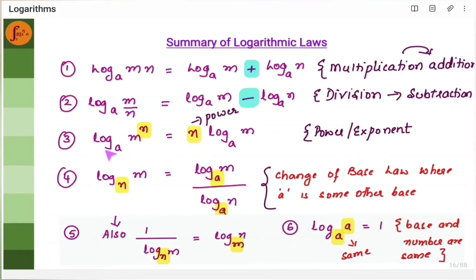The third law is log m to the power n. That is, if you have a power, then it is going to be n into log m — n is the power.